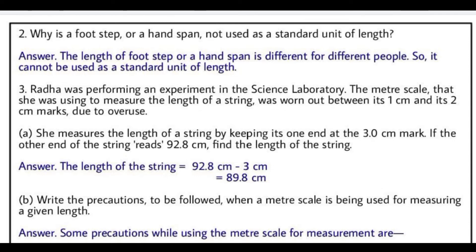Question number three is, Radha was performing an experiment in the science laboratory. The meter scale that she was using to measure the length of a string was worn between its one centimeter and its two centimeter marks due to overuse. Radha jo scale use kar rahi hai, us ka jo corner hai, one centimeter, two centimeter ke beech ka jo jagah hai, woh kisi tarah se kharab ho gaya hai, bahut zyada use karne ke karan. She measures the length of a string by keeping its one end at the three centimeter mark. If the other end of the string reads 92.8 centimeter, find the length of the string.